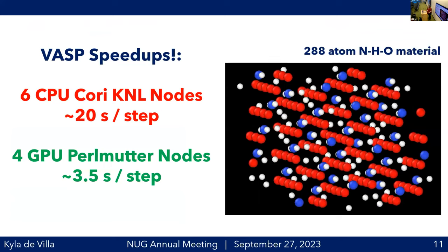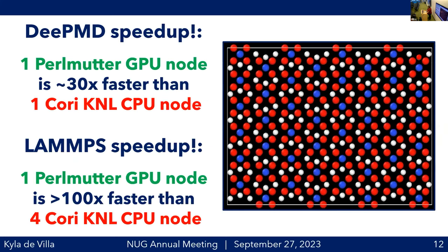Our group was really excited about Perlmutter's GPU nodes because VASP itself ran so much faster. Using four nodes versus six, we still got a six times speedup, enabling more simulations, bigger simulations, and more materials. Switching to GPU nodes for machine learning was mind-blowing. Training on Perlmutter versus Cori was about 30 times faster — something that took days became something I could run in the morning and play with in the afternoon. The actual molecular dynamics simulations were about 100 times faster using a quarter as many nodes. At this point I think it might be limited by write speed — if I printed less information it would probably go even faster.